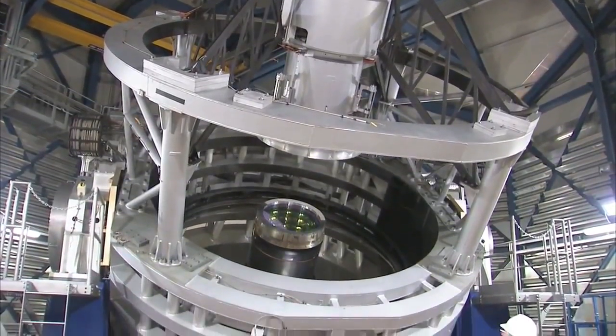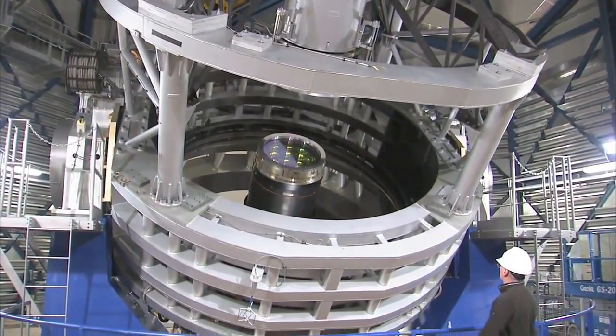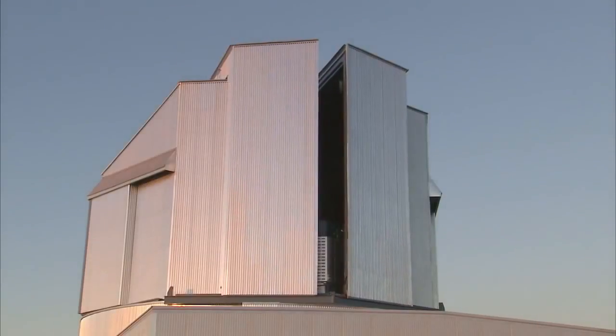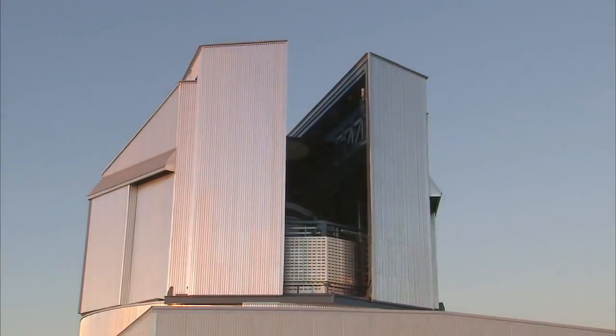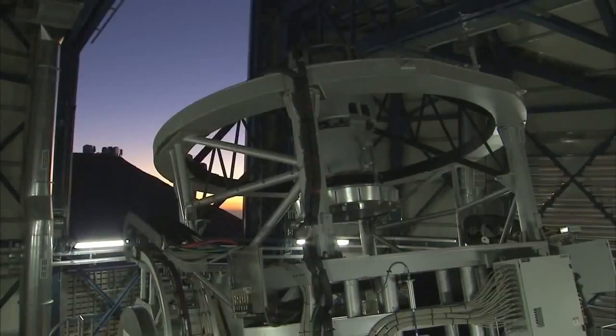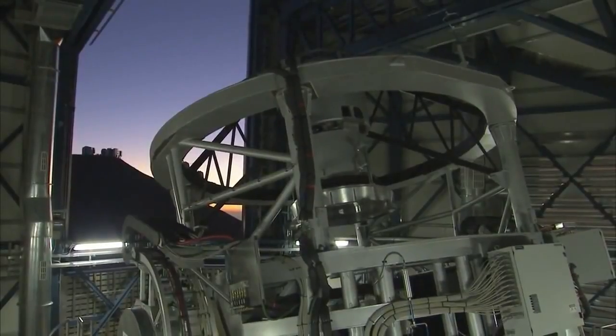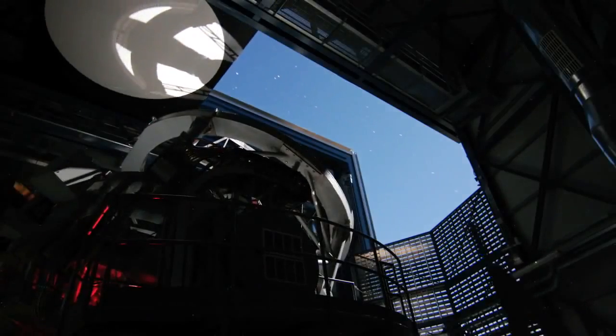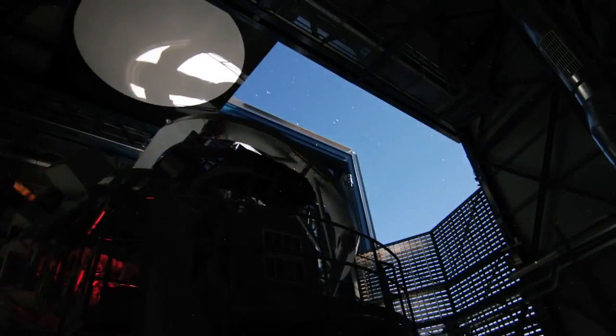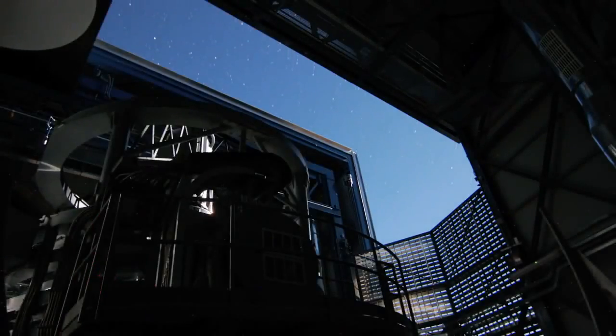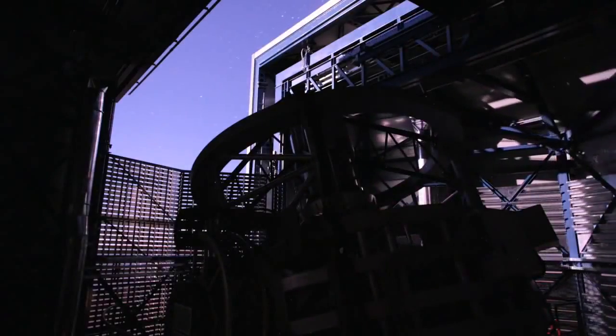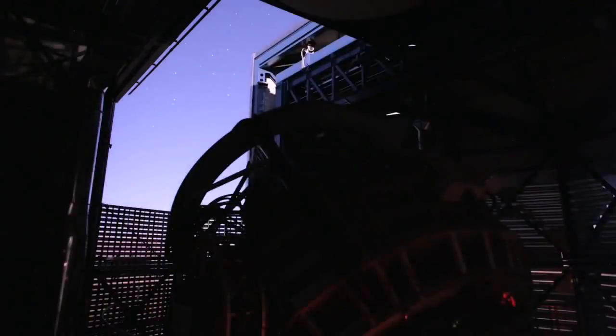The Visible and Infrared Survey Telescope for Astronomy, or VISTA, has taken a spectacular new image that reveals some of the nebula's buried secrets. VISTA is the latest addition to ESO's Paranal Observatory in Chile, and it's the largest survey telescope in the world, with a mirror measuring 4.1 meters in diameter. It's dedicated to mapping the sky in the infrared part of the spectrum.